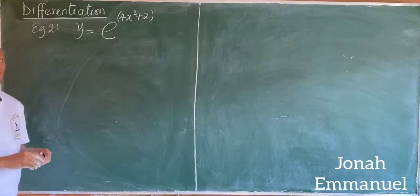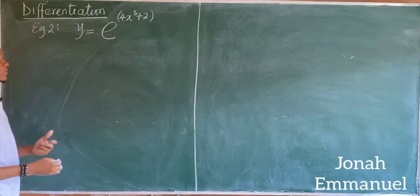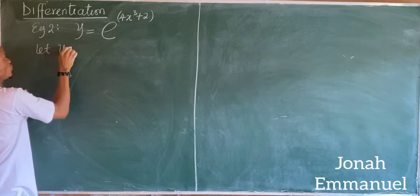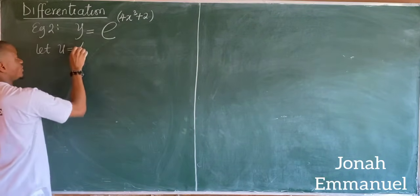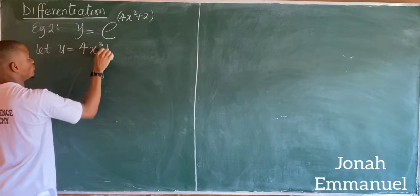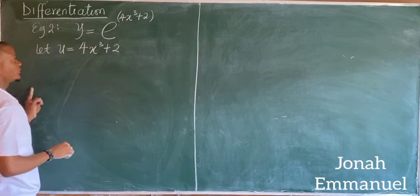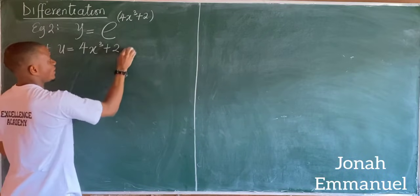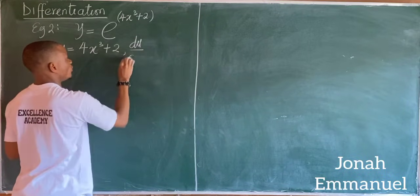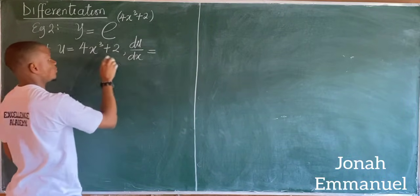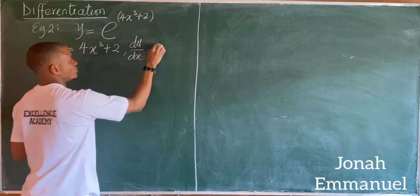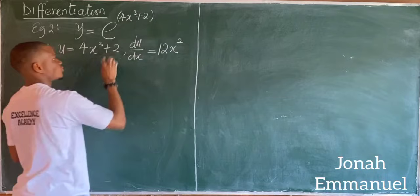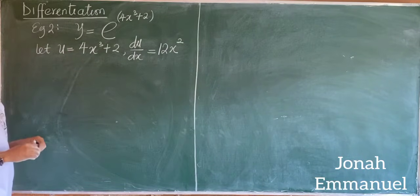Now I'm asked to differentiate this. Same concept. Let u be equal to the power here, that's 4x cubed plus 2. Differentiating u with respect to x, I'll have that du over dx is equal to 12x squared. The 2 is a constant, so it gives 0 and drops off.